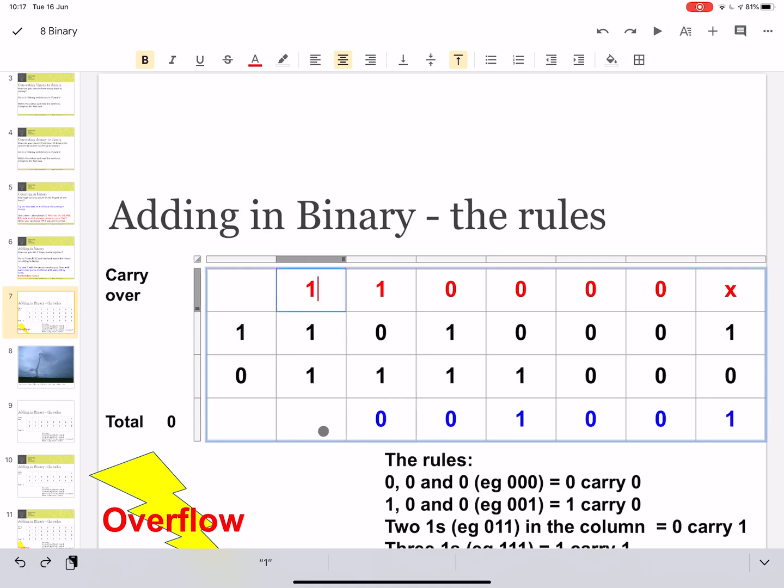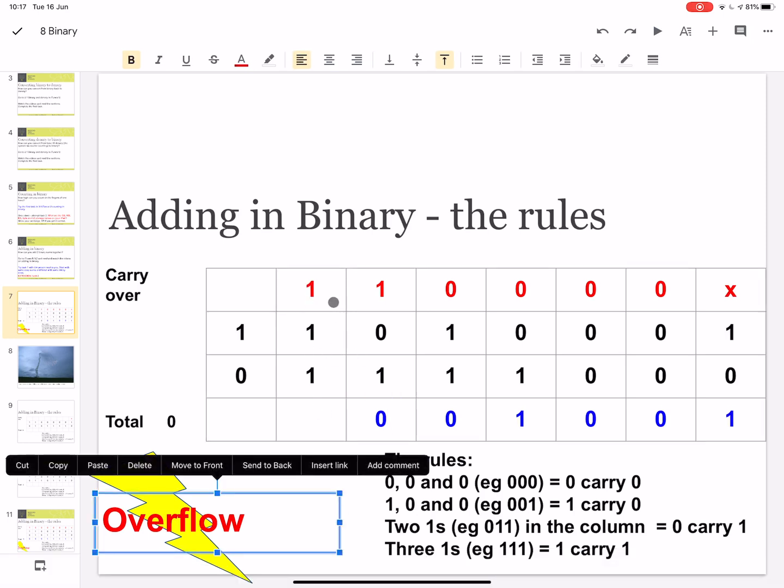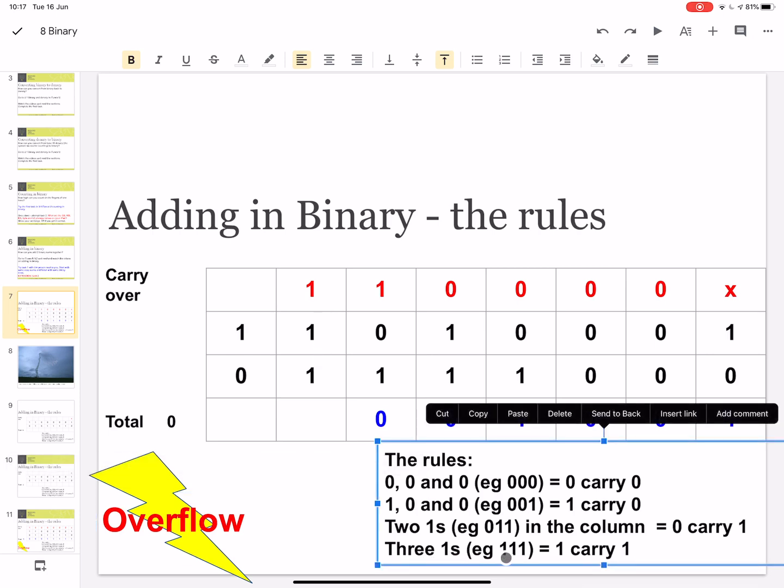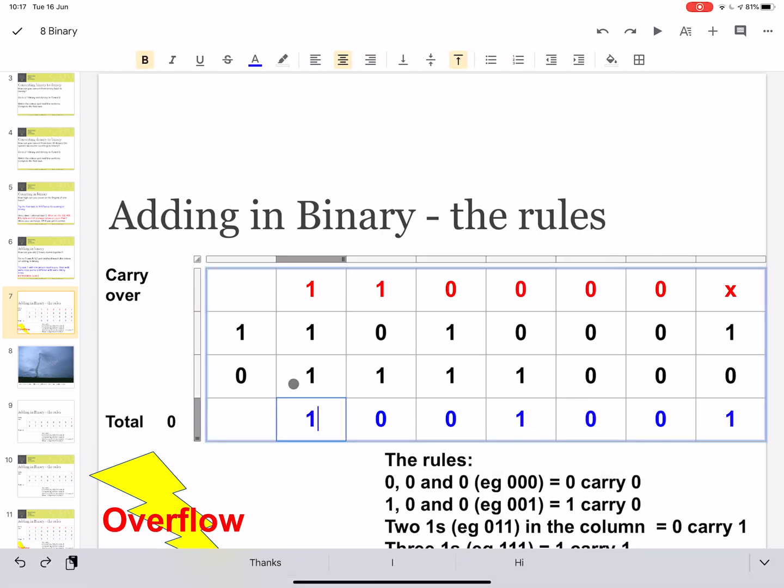Okay, something slightly different here. We've got 3 1s. So let's look down here at the rules. 3 1s is 1, carry 1. So we'll put 1 there and we'll carry 1 over.